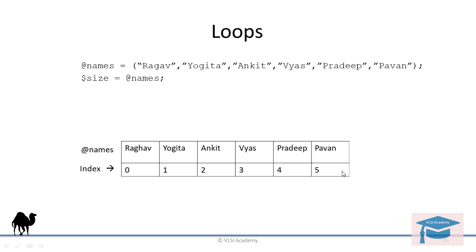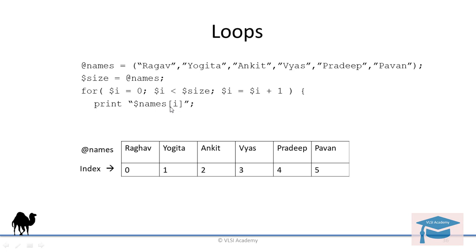Now let us see how to declare the for loop: for i equal to 0, i less than size, and i equal to i plus 1. Here i will be the index of the array, and it will keep on incrementing as long as it is less than the size of the array. Now print names of i — here names is your name array and i is the index. Initially i is 0, so names[0] will be Raghav and it will print Raghav, then increment to 1, names[1] will be Yogita, then names[2] will be Ankit, and so on as long as i is less than the size.